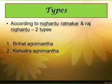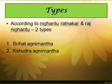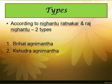As discussed earlier, there are two types of Agnimant: Laghu and Brihad Agnimant. Botanically, Laghu Agnimant is Clarodendron Phlomidis and Brihad Agnimant is Premna Integrifolia. These two types of Agnimant are quoted in Rajnighantu.